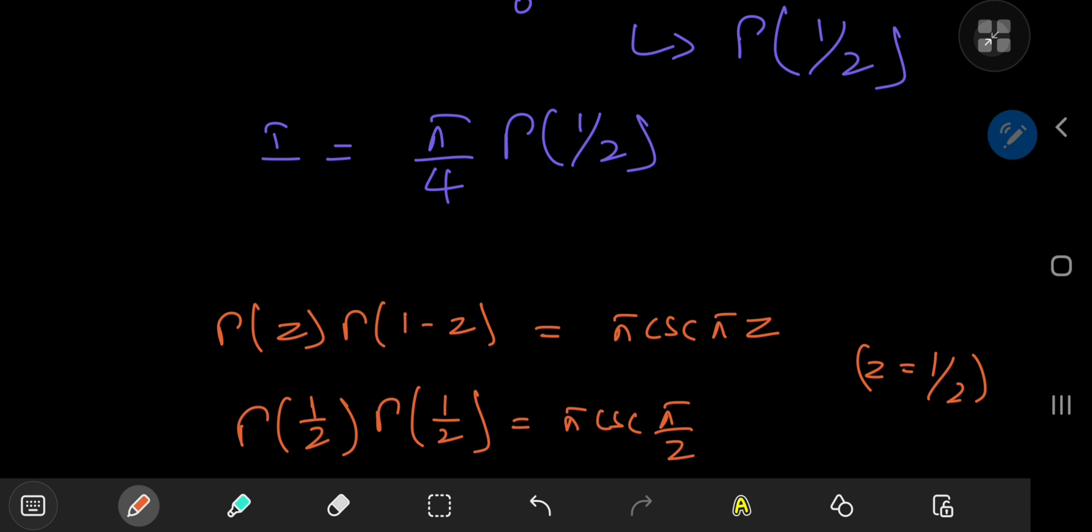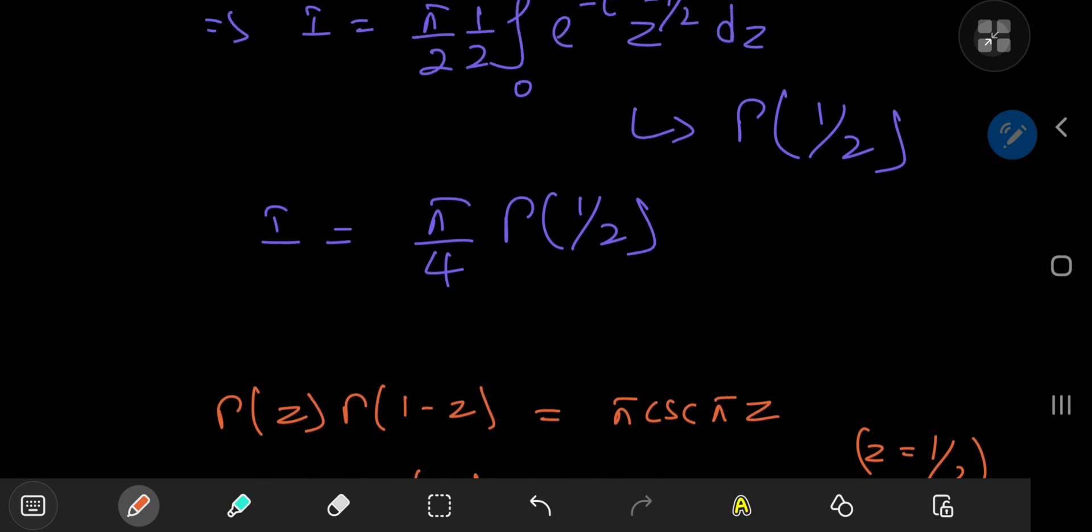See? Wasn't that a wonderful way to evaluate gamma 1 half? So this implies that i, our terrifying integral, which turned out to be not so terrifying at all,